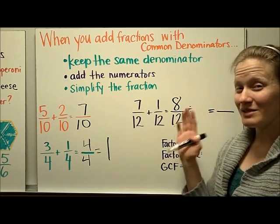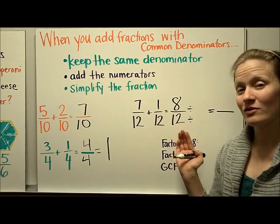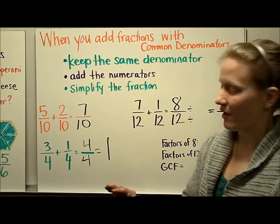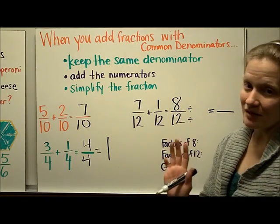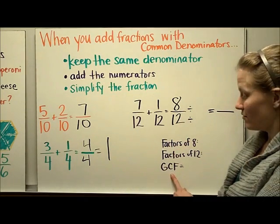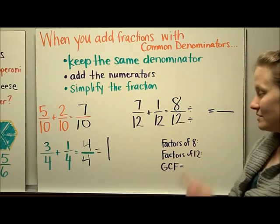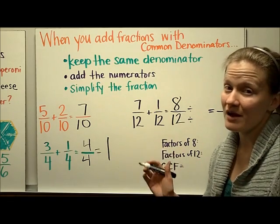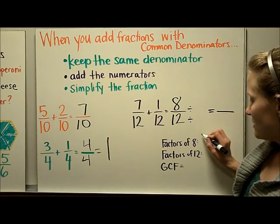Now, immediately when you see in a fraction that both of your numbers are even, you should think, I need to do some simplifying here. So I'm going to save myself some steps and go ahead and find the greatest common factor by listing the factors of 8. Remember, if you want to find a factor, you've got to break it down. Factors of 8,